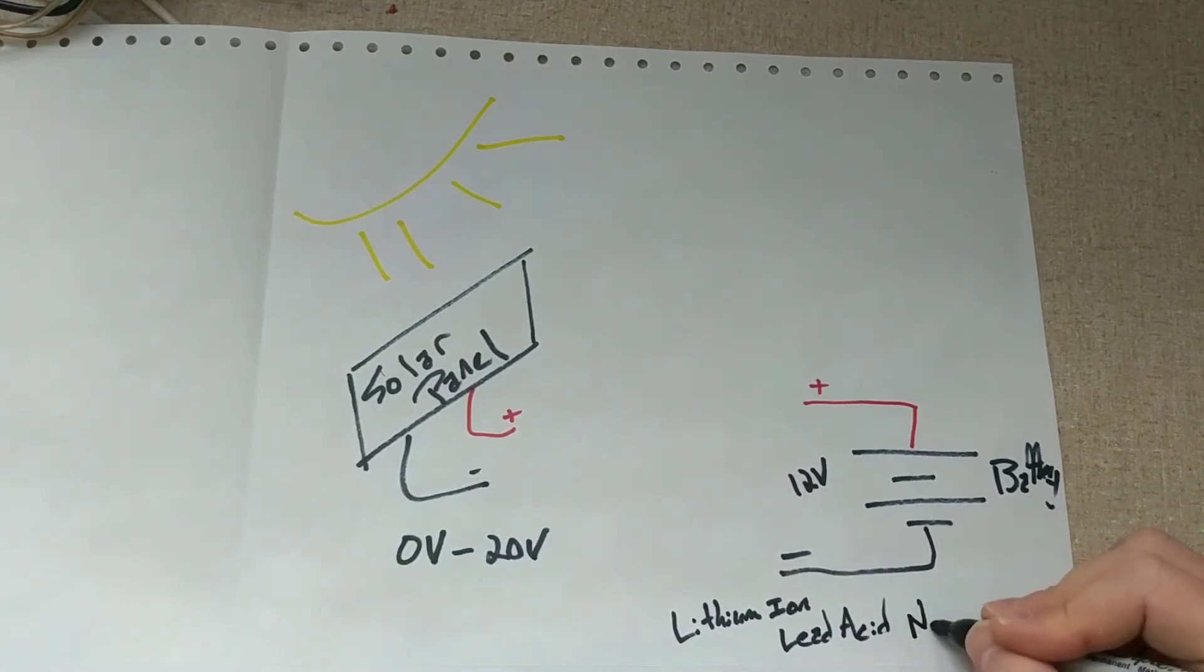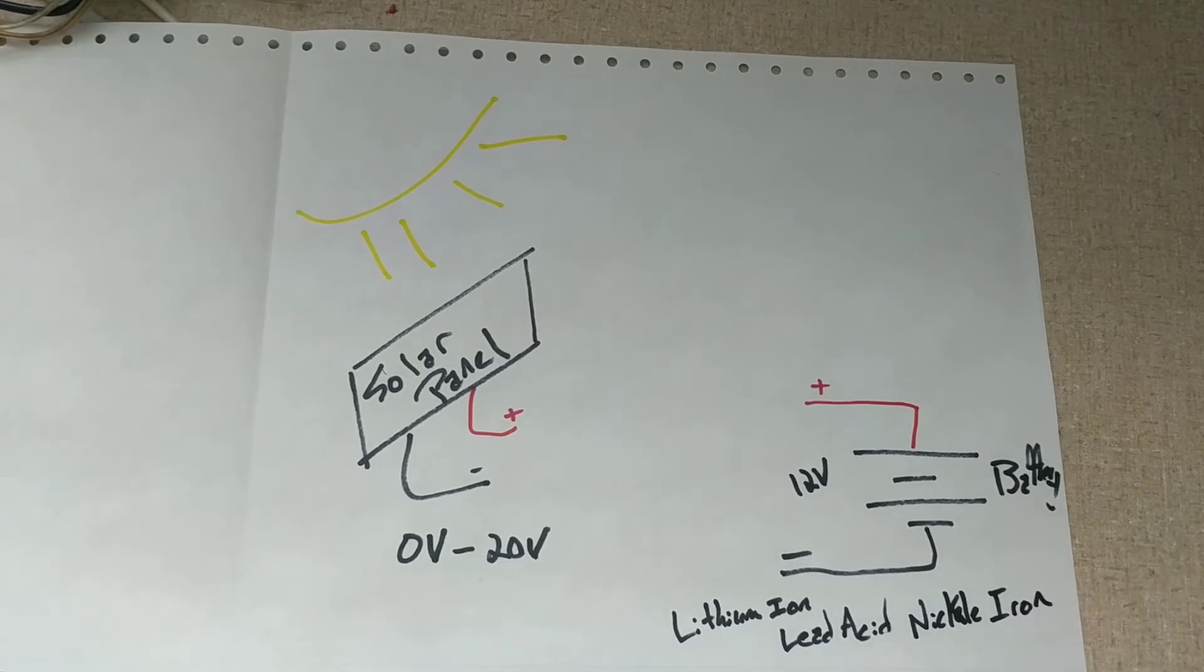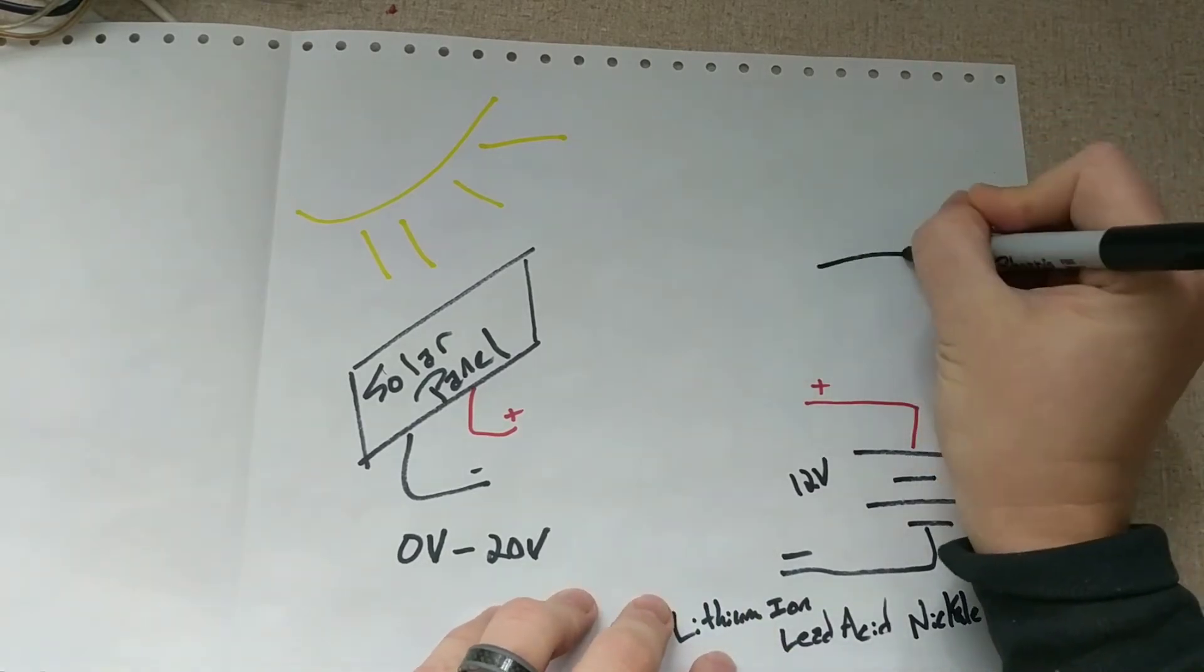Nickel iron, a.k.a. Edison batteries, are something I want to explore in the future. While they have lower current outputs, they can theoretically last forever. If we can manufacture these on Mars, they may be the best option for energy storage.